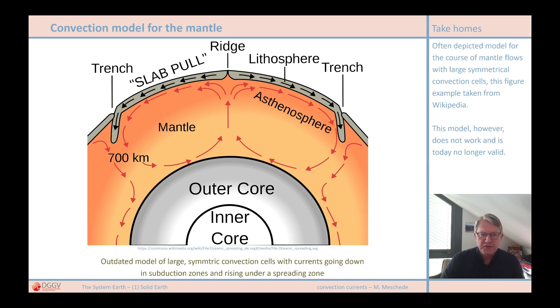If convection in the Earth's mantle really happened like it does here in the Wikipedia illustration, then the convection cells should not change their location. They would always have to stay in the same place, but we know that oceans constantly change their shape, first becoming ever wider and then gradually disappearing by being completely subducted. In this model, however, the closure of an ocean would not be possible at all.